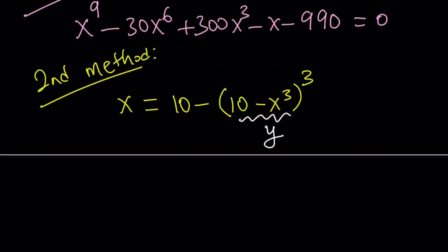If you call that y, we're basically saying that y equals 10 minus x cubed. But at the same time, we're also saying x equals 10 minus y cubed. And this is amazing. Why? Because this is a really nice system.